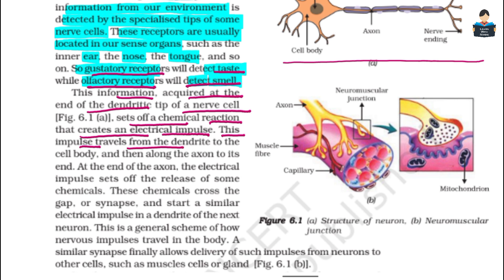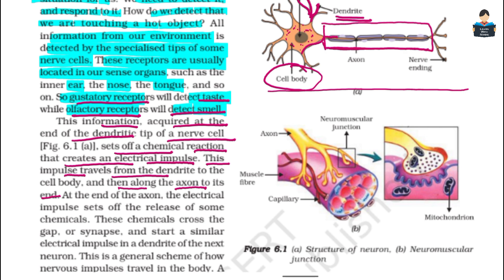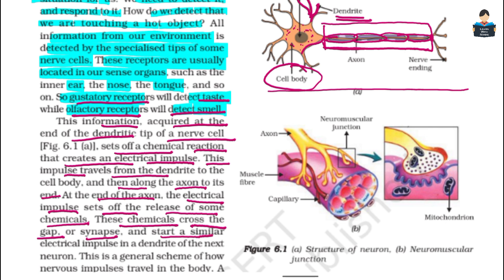This electrical impulse travels from the dendrite to the cell body, and then along the axon to its end. At the end of the axon, the electrical impulse sets off the release of some chemicals. These chemicals cross the gap, called the synapse, and start a similar electrical impulse in the dendrite of the next neuron.